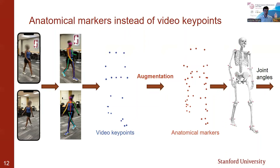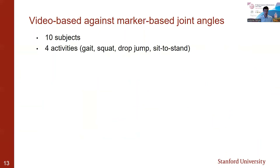The next question is: does that really produce more accurate results than when using video keypoints directly? To answer this, we evaluated joint angles estimated from videos against joint angles estimated with marker-based motion capture. We collected marker data from 10 subjects performing four different types of activities — gait, squat, drop jump, and sit to stand — and estimated joint angles using inverse kinematics in OpenSim as the reference.